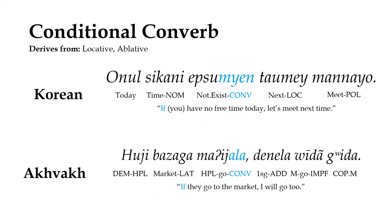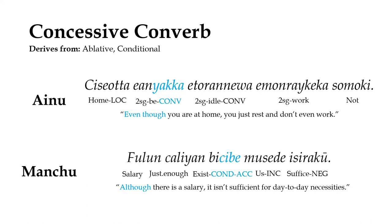Many languages will also have a distinct conditional converb, which sets up the converb clause as a condition under which the main verb happens, equivalent to the English word if. This converb most often comes from an ablative or locative case, which when combined with the verbal noun or participle may lead to an interpretation of in the event of. The concessive converb is used to draw a contrast between the converb clause and the main clause, similar to although in English. This form usually comes from ablative morphology, although it's sometimes also formed from the conditional converb.